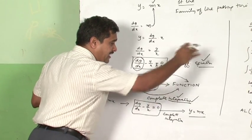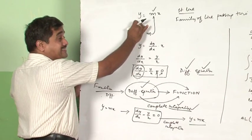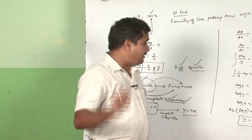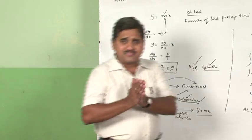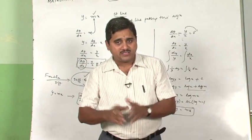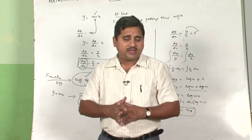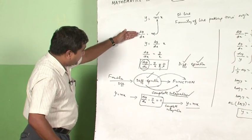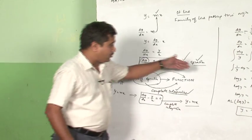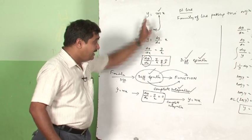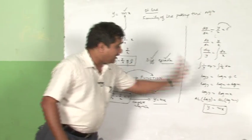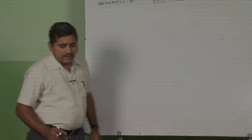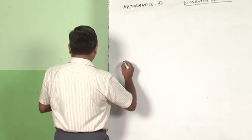So I completed the journey: I took the function y = mx, differentiated it to get the differential equation, then integrated the differential equation through a method I will detail later, and got back to y = mx. To summarize: a differential equation is an equation which has derivatives as its components along with the independent and dependent variables x and y. To obtain a differential equation, differentiate a function; to go back, perform complete integration.